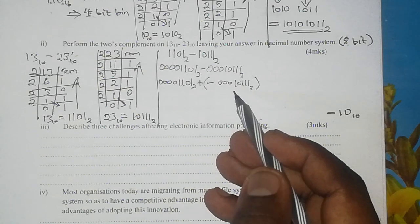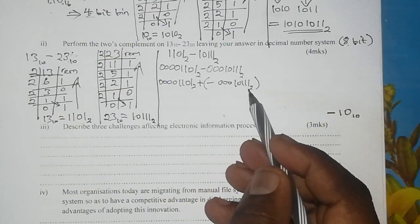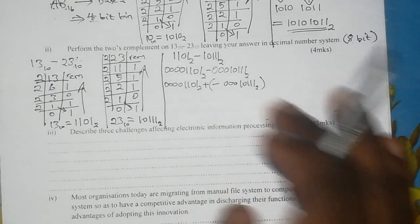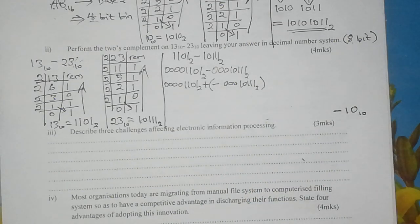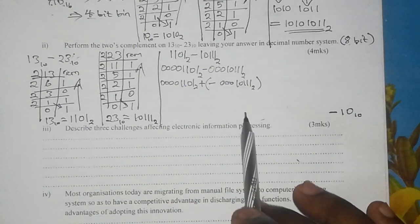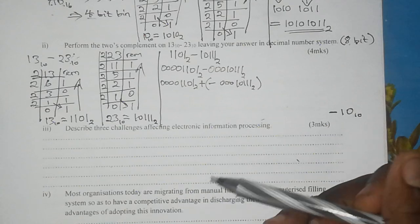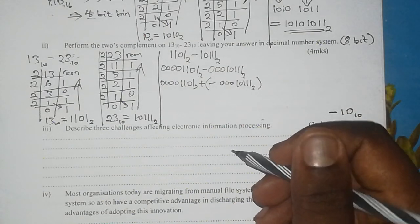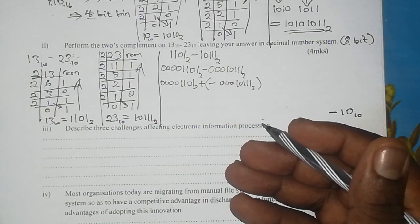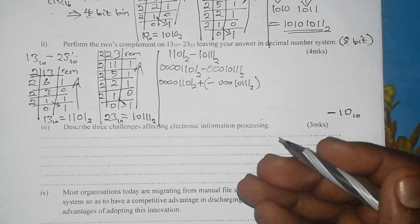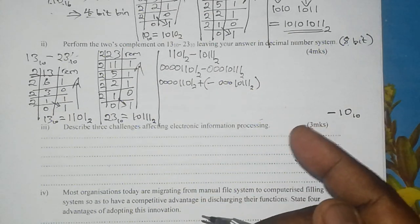To get a 2's complement, you first have to get the 1's complement and then next you add 1 to the 1's complement.